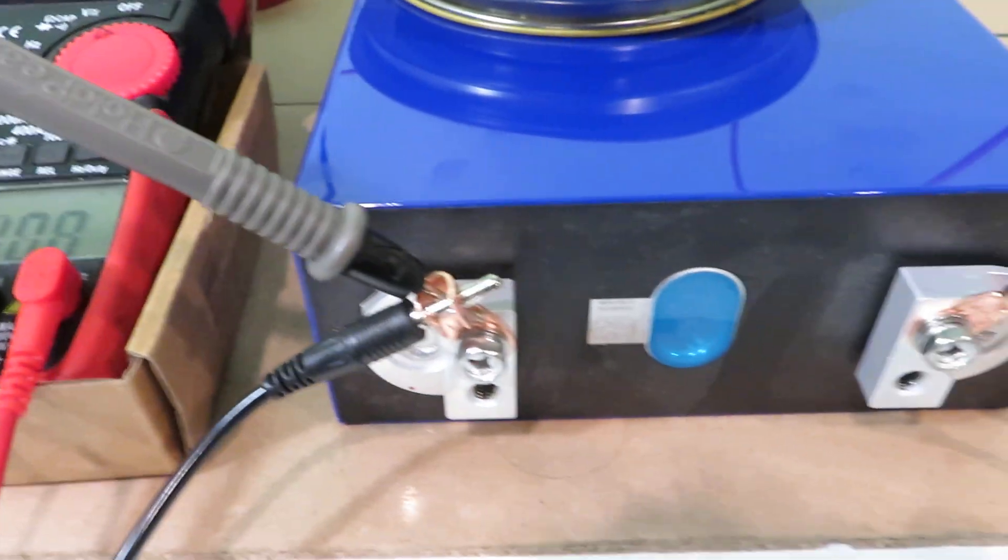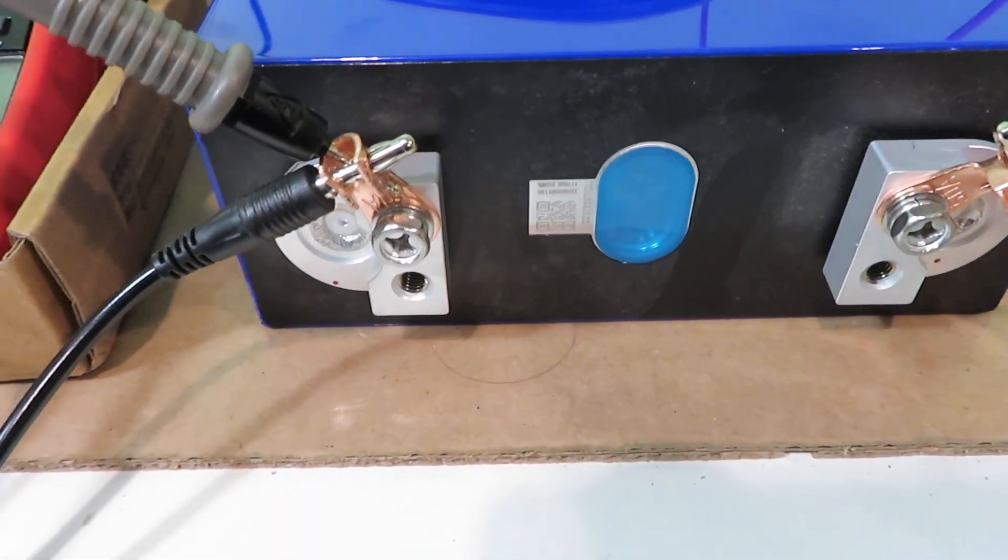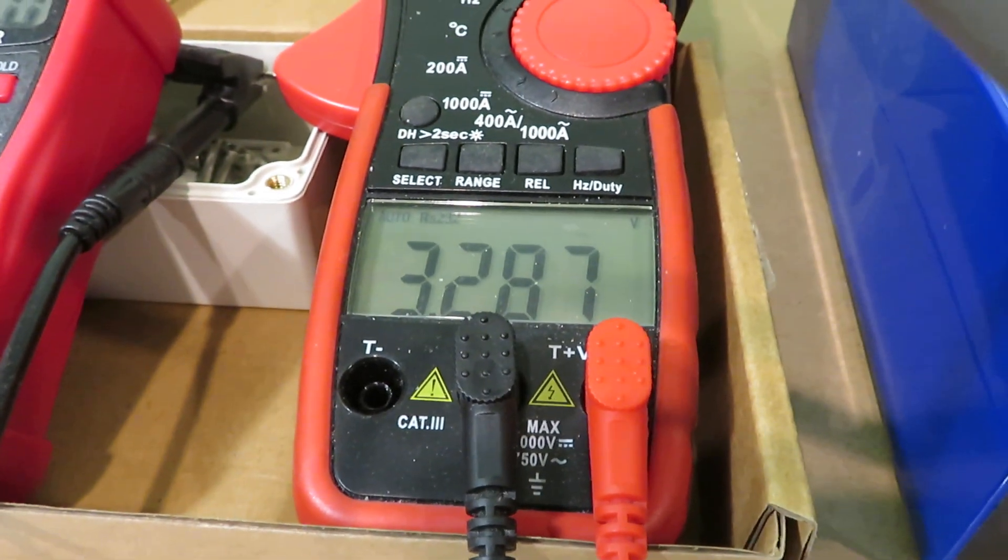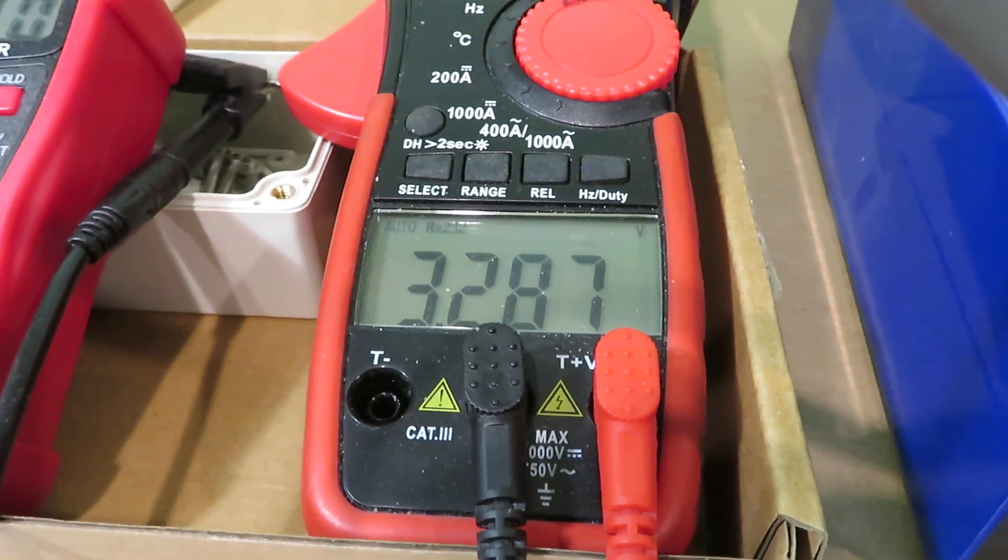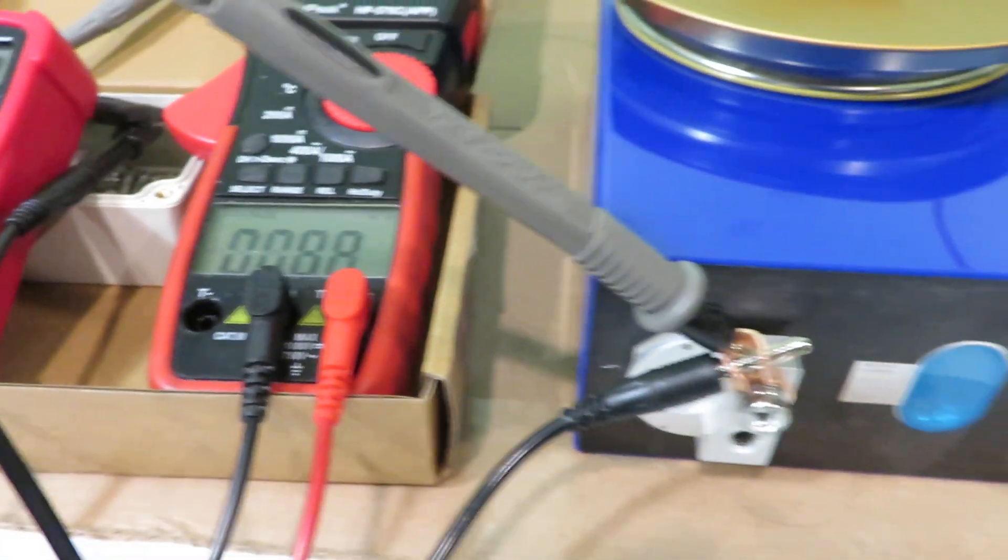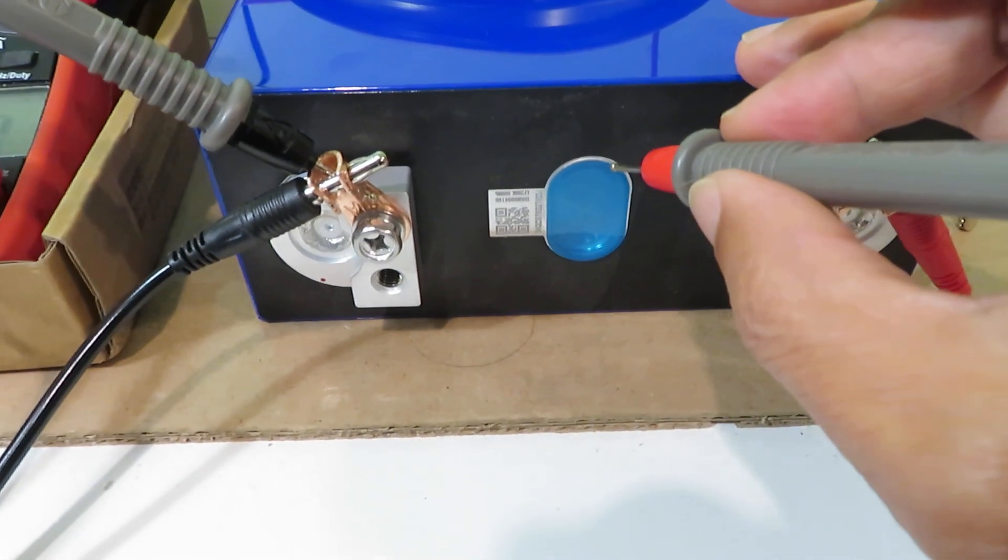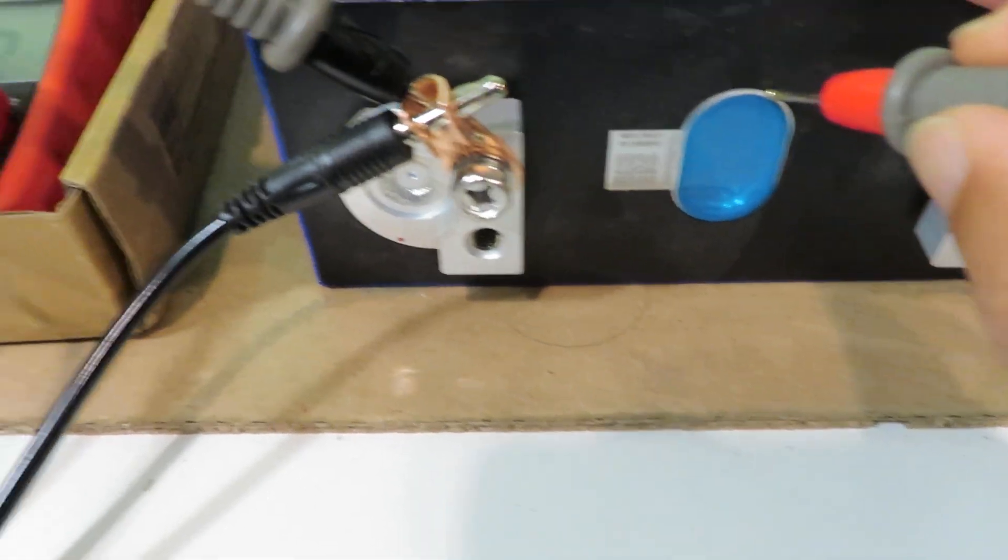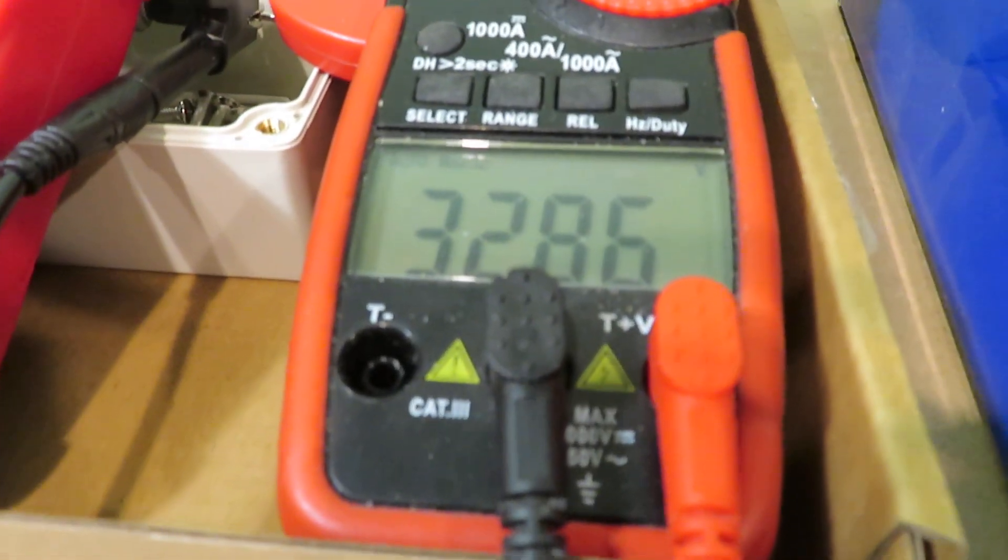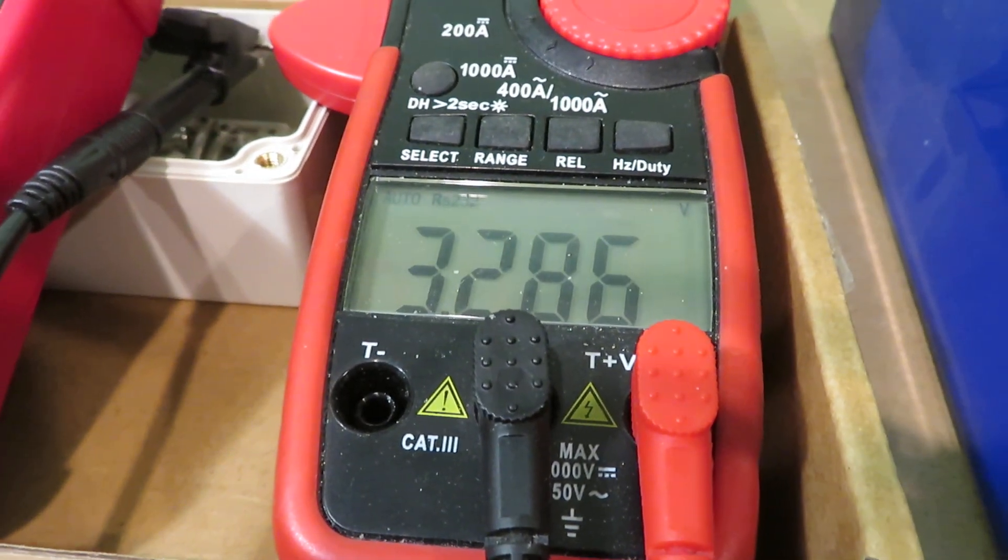And I look at the positive terminal again - 3.287 volts. Now let me measure the aluminum casing again - 3.286 volts.